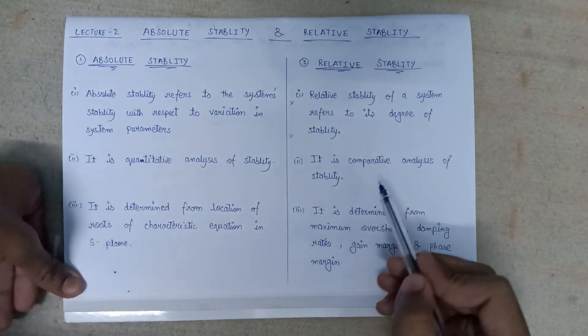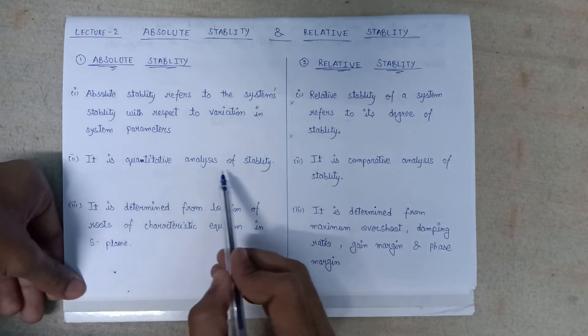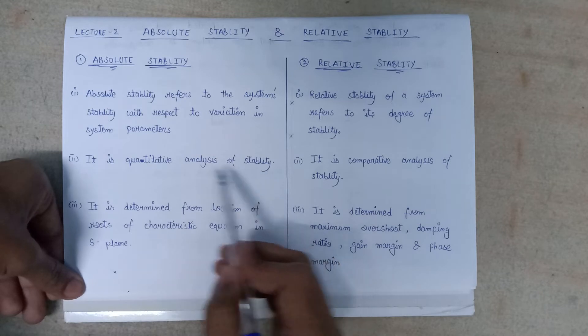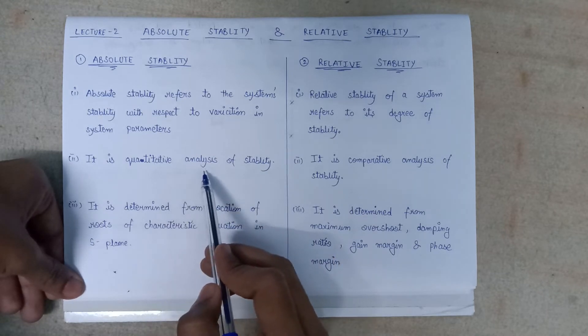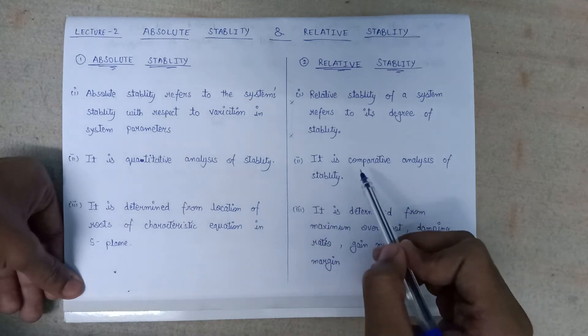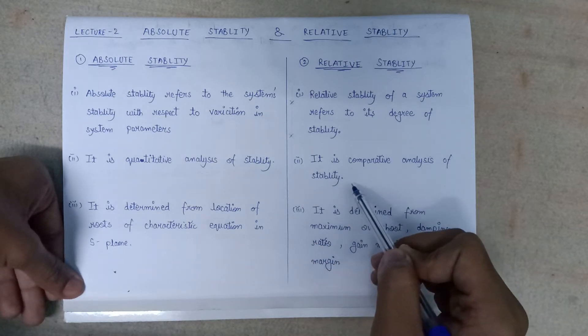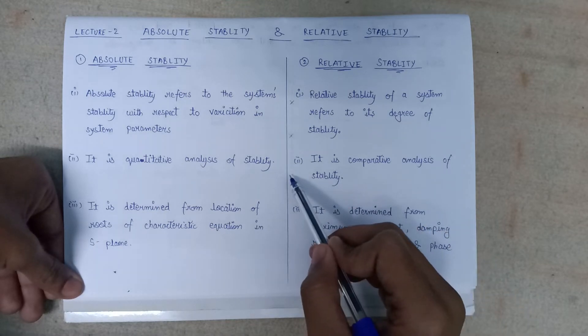Moving to the second point, it is a qualitative analysis of stability. So the absolute stability is the qualitative analysis of stability, whereas the relative stability is a comparative analysis of stability. This is the very major point on which it can be differentiated.